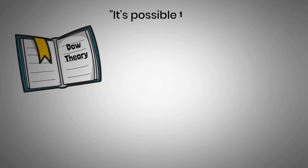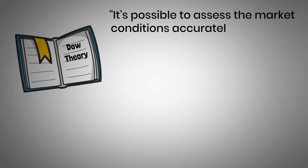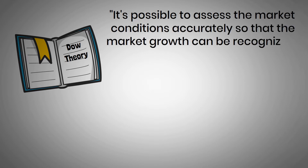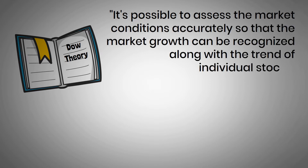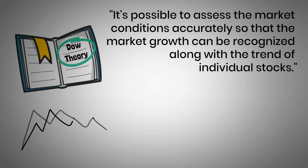As a financial market theory, Dow's theory stated that it was possible to assess the market conditions accurately so that market growth can be recognized along with the trend of individual stocks. Dow theory was the first phenomenon to explain market moves.